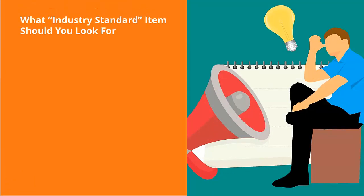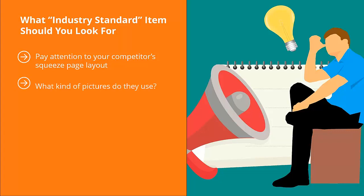What industry standard items should you look for? Pay attention to your competitors' squeeze page layout — the sign-up page they use to get their target audience to join their mailing list. Notice how they lay out these pages, what kind of pictures they use, what kind of text they present, how they format their text, whether they tell stories or show videos. Next, pay attention to their sales funnel layout. Your competitors have a standard way of getting people to sign up to their mailing list and also selling those list members a wide range of products and services.